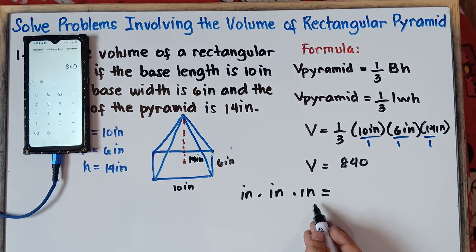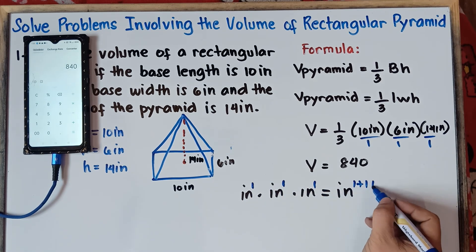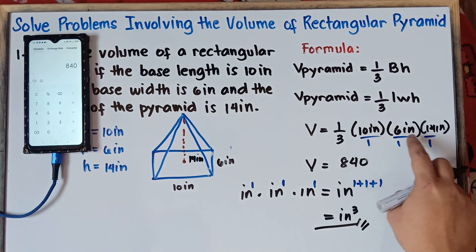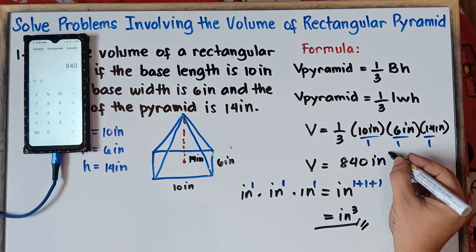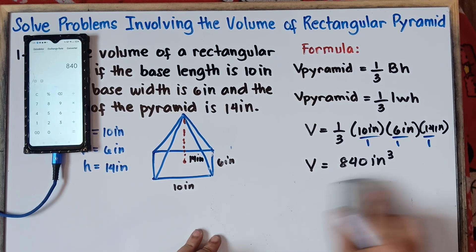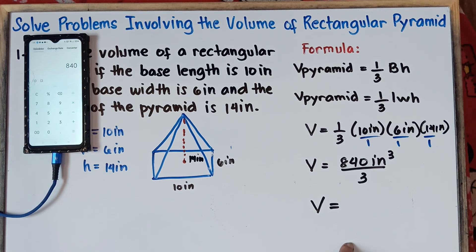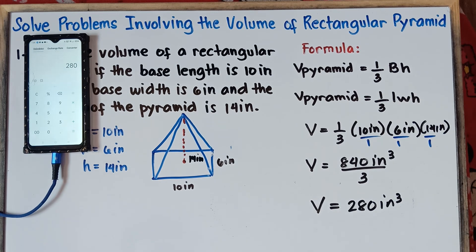Since we have the same base units, copy the unit and add the exponents. 1 plus 1 plus 1 equals 3, so the unit is cubic inches. Do not forget we still have to divide by 3. Multiplying the denominators: 3 times 1 times 1 times 1 equals 3. So 840 cubic inches divided by 3 equals 280 cubic inches. That's the answer for Example 1.